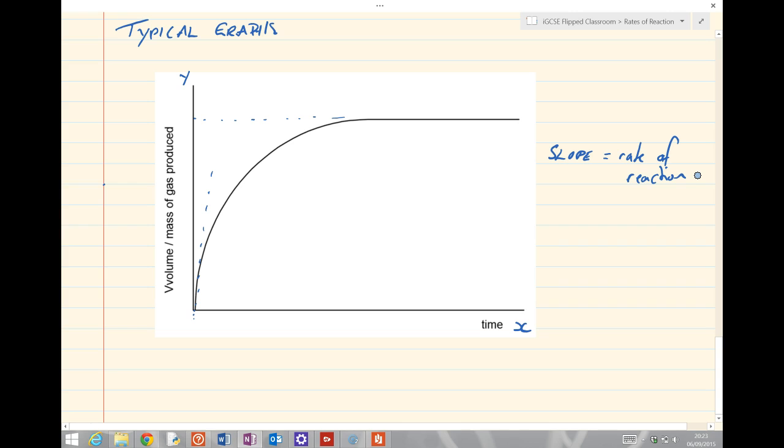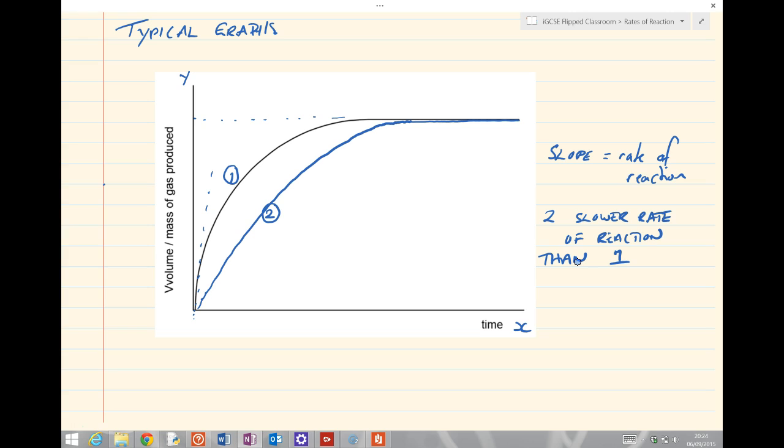Now that's important because we can describe some other instances. If I had a reaction and the graph that I plotted look like this, we'll do it with a solid line to the same point. How does the rate of reaction in line 2 compare to line 1? That's right, line 2 has a slower rate of reaction than line 1 because it's got a less steep curve or a shallower curve, so the rate of reaction is slower.